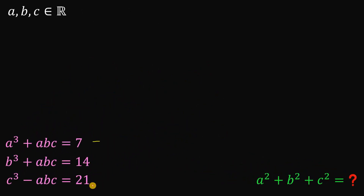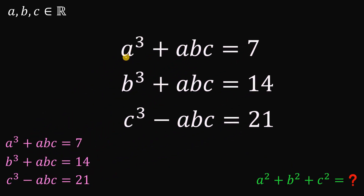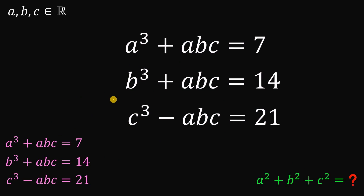So given these three equations, wherein a, b, and c are all real numbers, the goal is to evaluate a squared plus b squared plus c squared. To answer this, let's use these three equations. One thing to notice is when we add 7 and 14, we have 21.